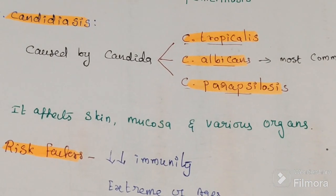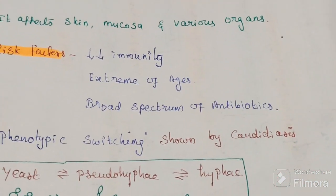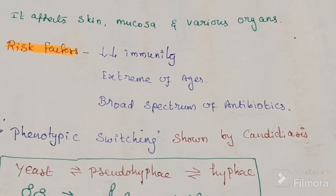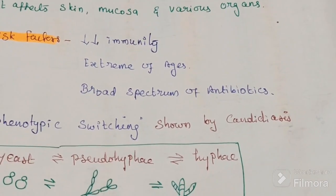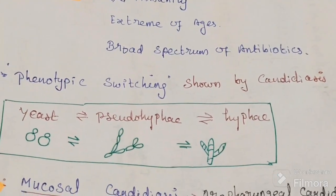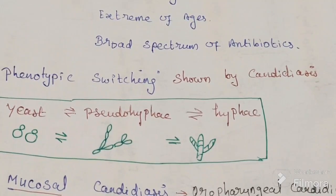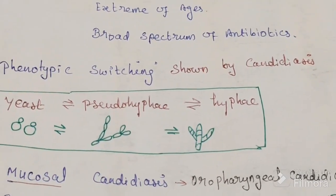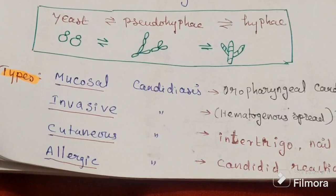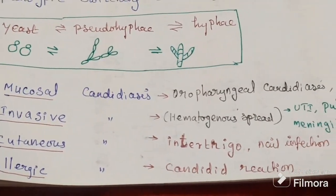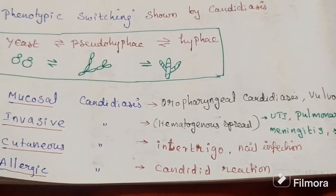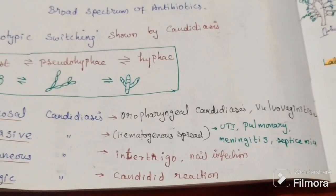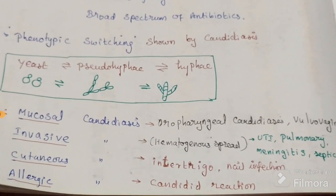Candida is the fungus; candidiasis is the disease. Candida causes phenotypic switching, giving rise to candidiasis. It has a yeast form that converts into pseudohyphae and hyphae, which can revert back. Types of candidiasis include mucosal candidiasis, invasive candidiasis, cutaneous candidiasis, and allergic candidiasis.